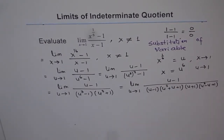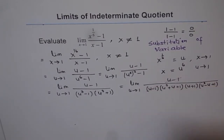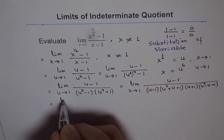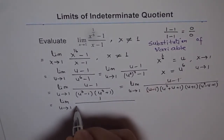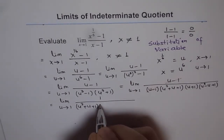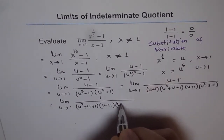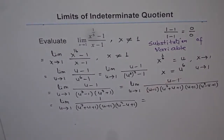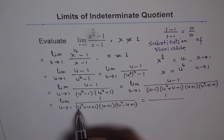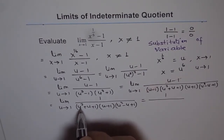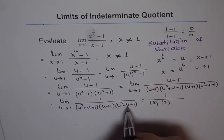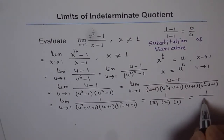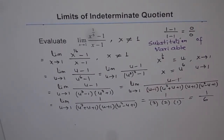As you can see, u minus 1 is a common factor in both numerator and denominator and can be canceled, simplifying our expression. We are left with the limit as u approaches 1 of 1 over (u^2 + u + 1)(u + 1)(u^2 minus u + 1). Substituting u = 1: numerator is 1; denominator is (1 + 1 + 1) times (1 + 1) times (1 minus 1 + 1) = 3 times 2 times 1 = 6. So the limit is 1/6.